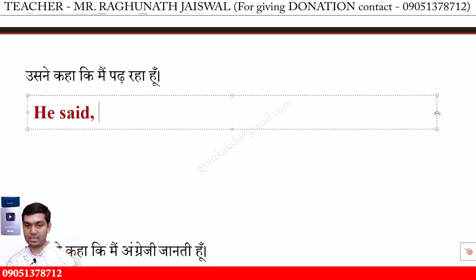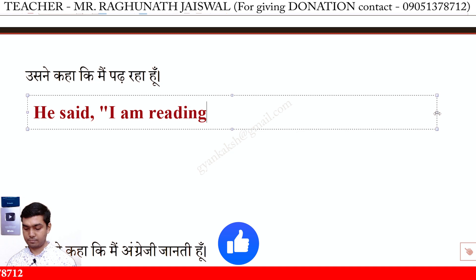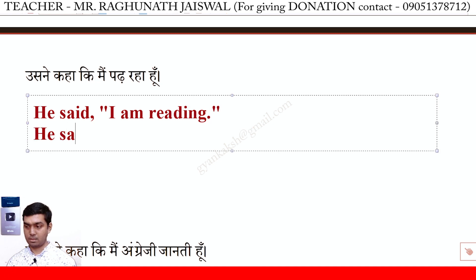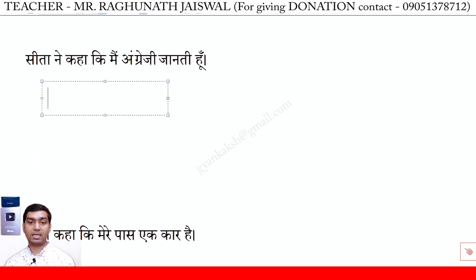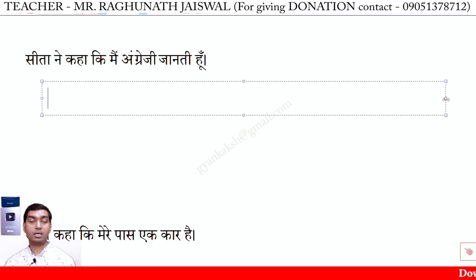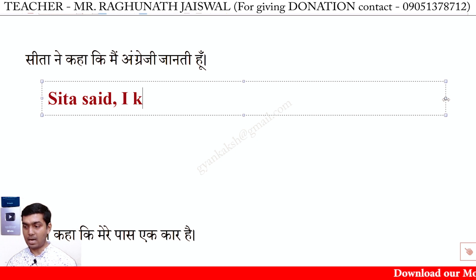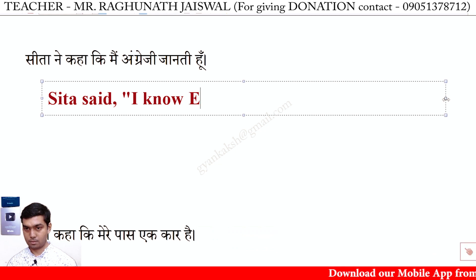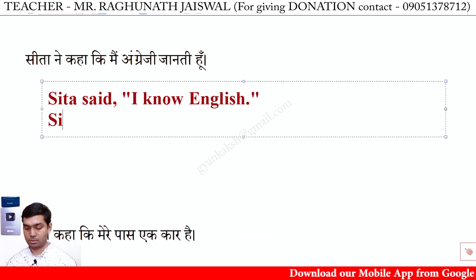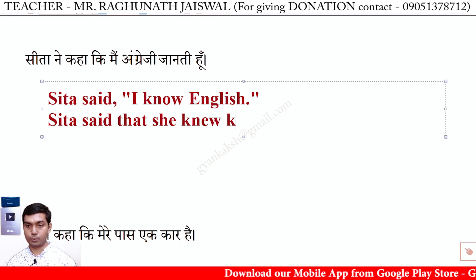Direct: He said, 'I am reading.' Indirect: He said that he was reading. Sita ne kaha mein angrezi jaanti hoon. Direct: Sita said, 'I know English.' Indirect: Sita said that she knew English.